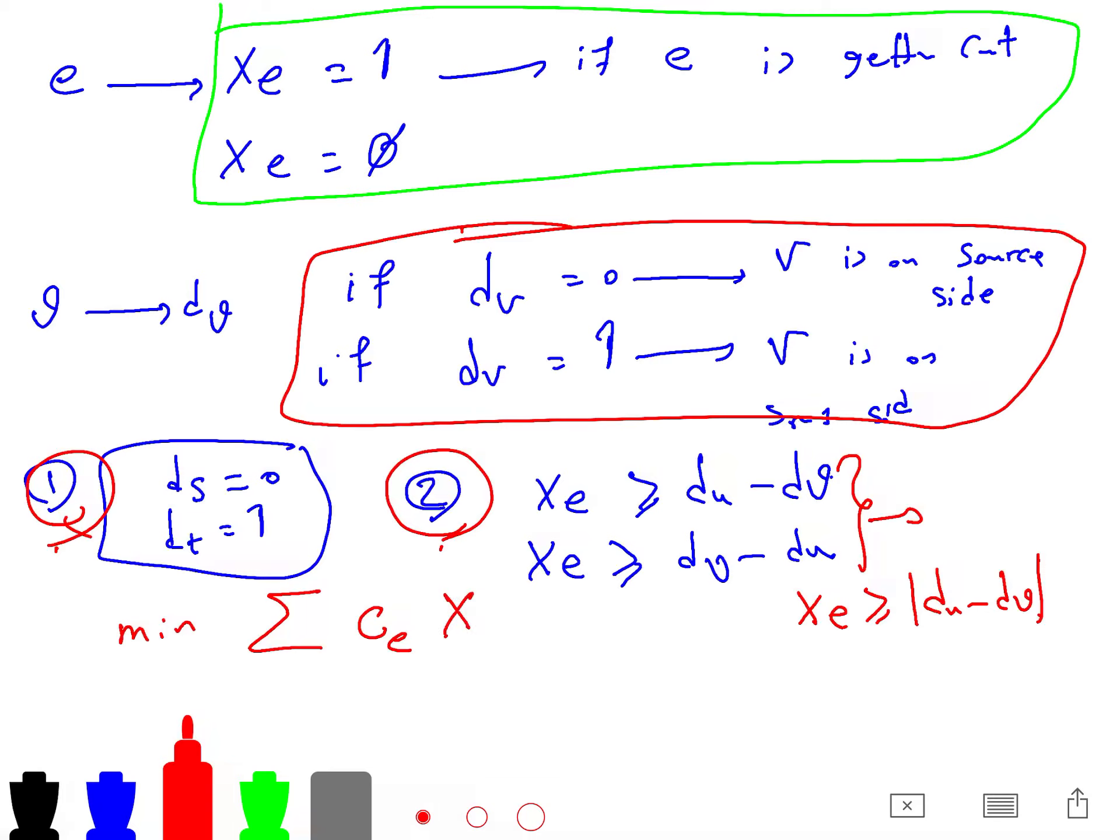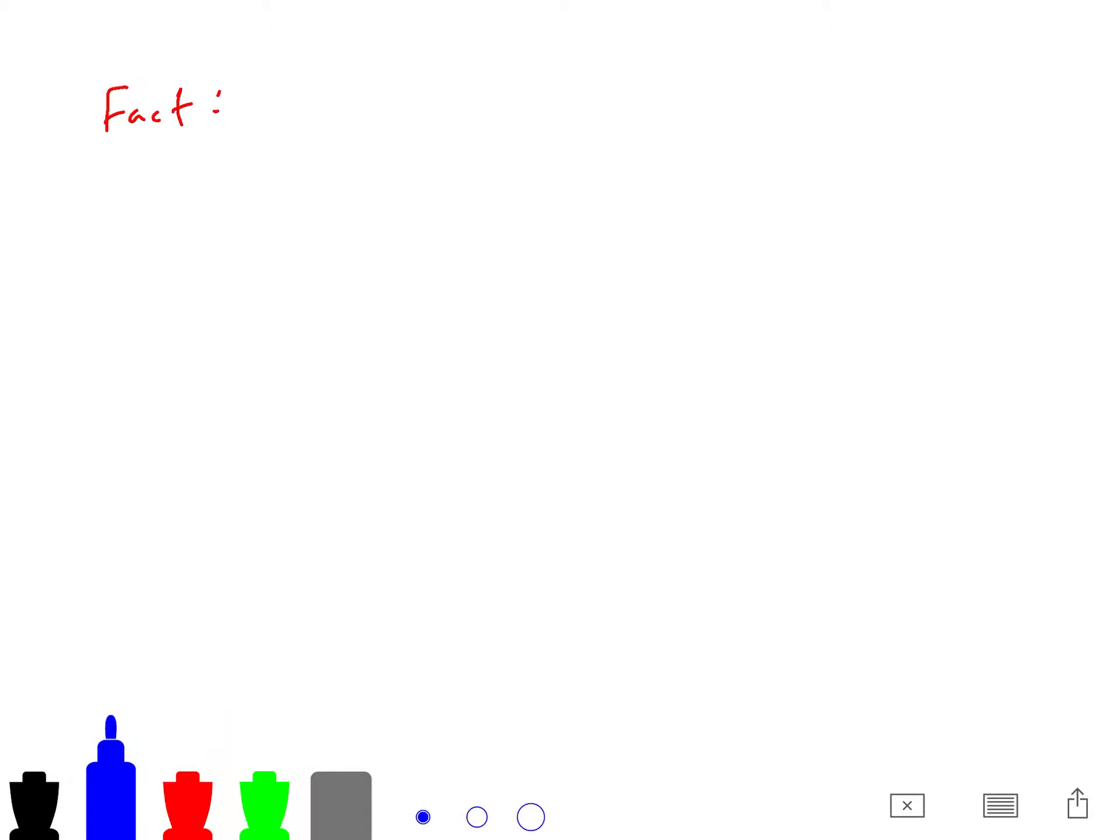So using constraint 2 and 1, we can minimize this optimization problem. So C of E, cost of edge E, and your variable for edge, X of E, which I have defined here. So if we minimize this, then your ST cut problem is solved. But the fact is that we can solve LP in polynomial time. And of course, we use Python libraries. So we look at the LP as just a black box. We don't care about your simplex algorithm, any algorithm that Python library uses.